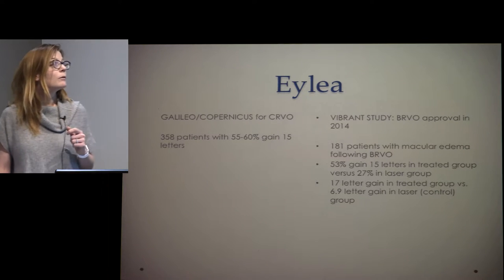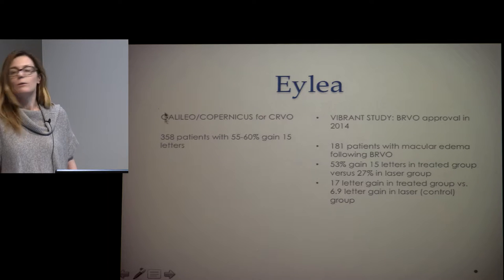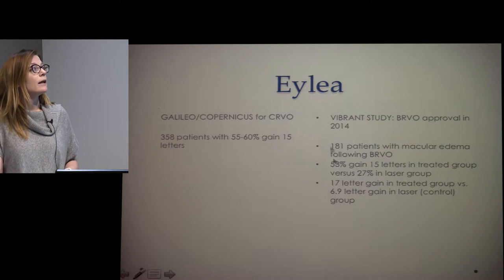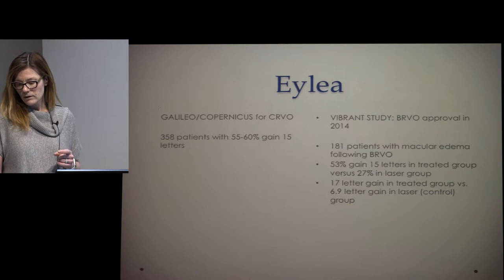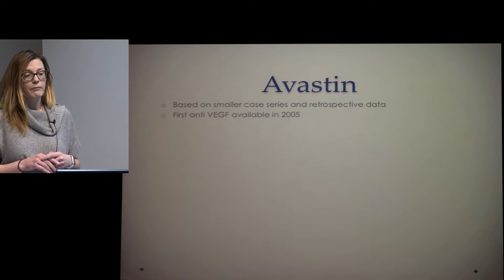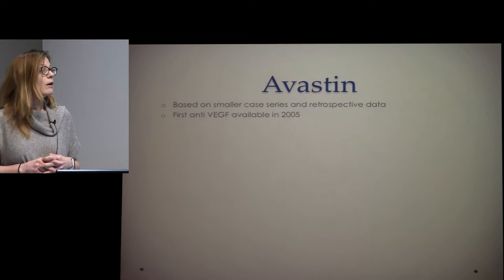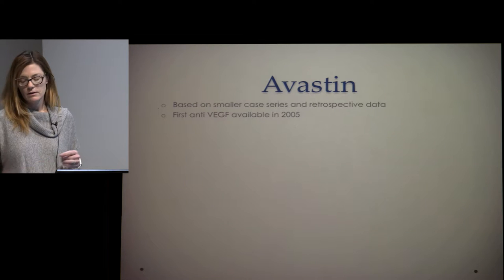Aflibercept (EYLEA) is also approved for branch and central retinal vein occlusions, with similar results from the Galileo and Copernicus studies. EYLEA got its approval for central vein occlusions in 2012 and for branch vein occlusion in 2014. Most of us start with Avastin as an off-label medication — there's no landmark large trial for Avastin in vein occlusions, but it's based on smaller case series, retrospective data, and extrapolation from AMD trials.